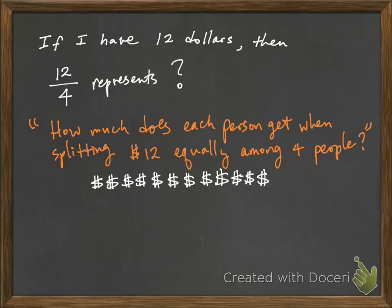If I have $12, to split the money equally among 4 people, that means I have to take those $12 signs and group them so that in each group I have exactly the same number of dollars and I have 4 groups total.